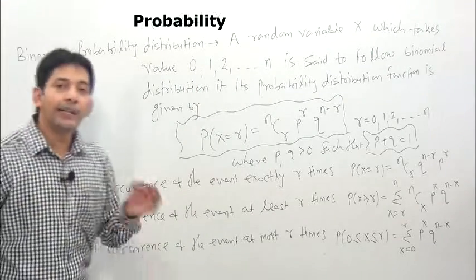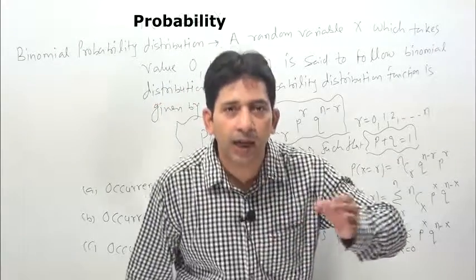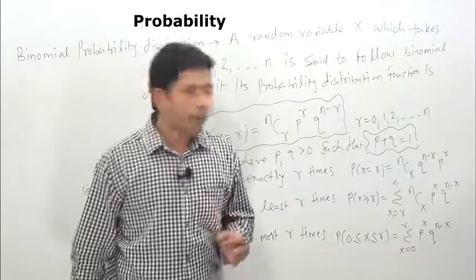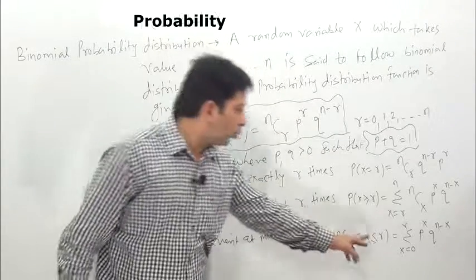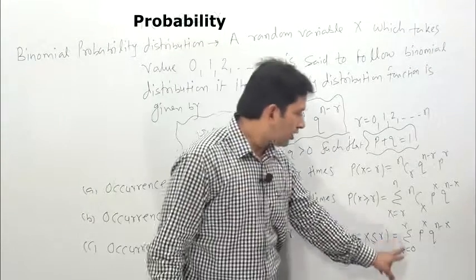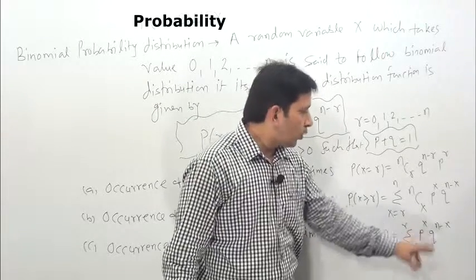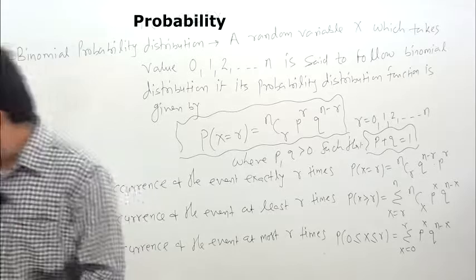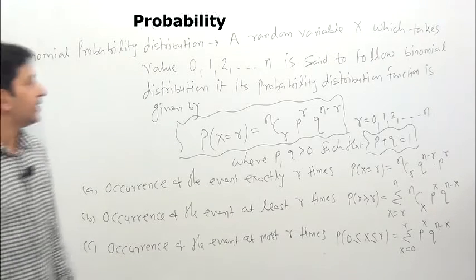The third case is occurrence of the event at most r times. 'At most r times' means from 0 up to r times. So 'at least r' starts from r and goes up to n, while 'at most' always starts from 0: 0, 1, 2, 3, up to r. In sigma notation: sum from x = 0 to r of P(x = r) = nCx × q^(n−x).